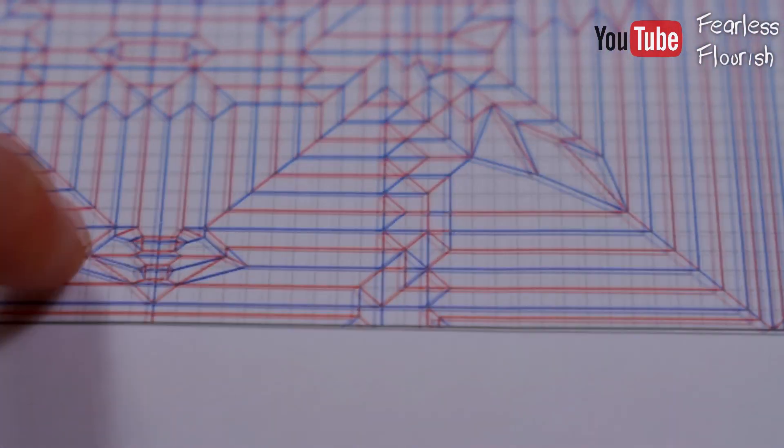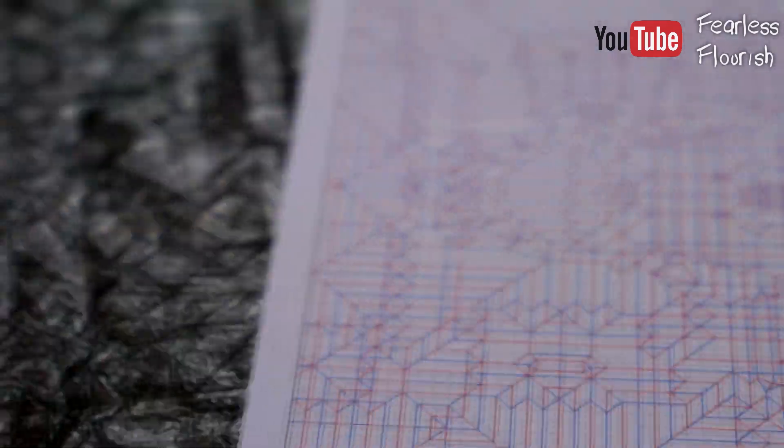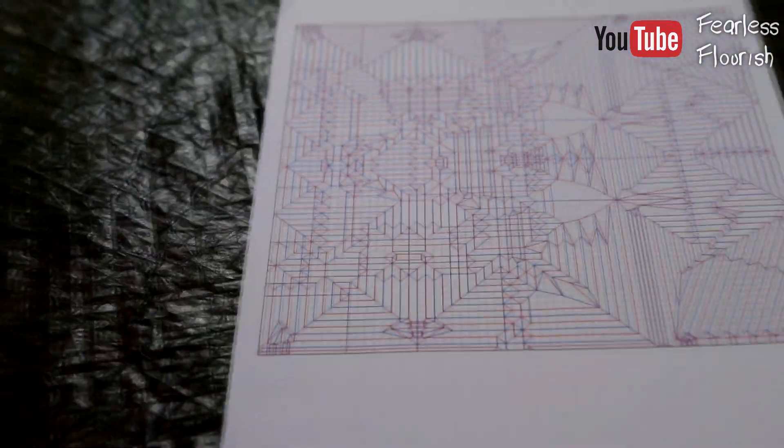Whereas if I take my time and make all the valley folds, strong valley folds on the white side, then this part will be much more easier to collapse. And especially with the whole crease pattern in general and any crease pattern. You're setting yourself up. You're making it much easier to collapse.